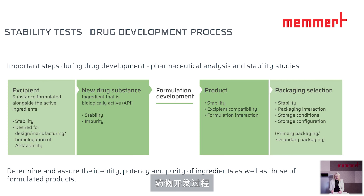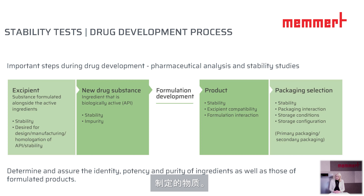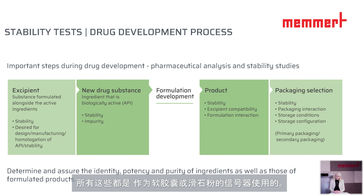The drug development process starts with the excipients, which are substances formulated alongside the active ingredients. These are also called bulking agents or fillers. This could be lactose or paraffin, water, or ethanol. All of these are used, for example, in soft capsules, or talc may also be used.